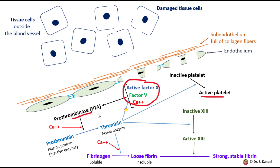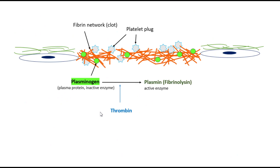Even though the four important functions discussed so far are all involved in the formation of blood clots, thrombin also has a role in the removal of blood clots. Sometimes blood clots accidentally form, and even when blood clots form necessarily, at some point we need the blood clot to be removed so repair can happen in that area.